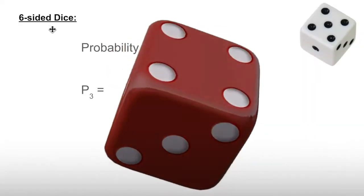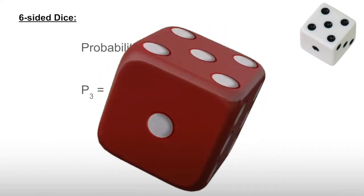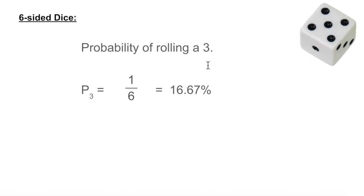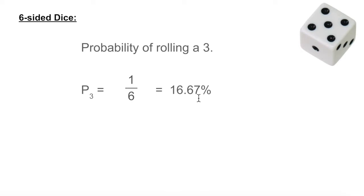So here we're going to roll a six-sided die. What is the probability of rolling a 3? The probability of rolling a 3 is the number of winning outcomes divided by the number of total outcomes. Since this is a six-sided die, there are six possible outcomes: one, two, three, four, five, or six could come up. But there is only one 3 on the die. So since we have one winning outcome — one 3 — and six possible outcomes, the probability of rolling a 3 is one-sixth, which is equivalent to 16.67%.